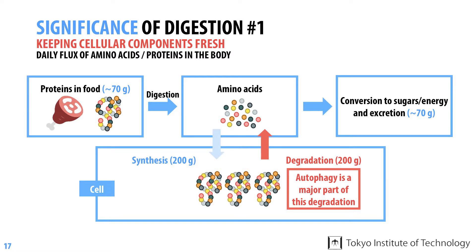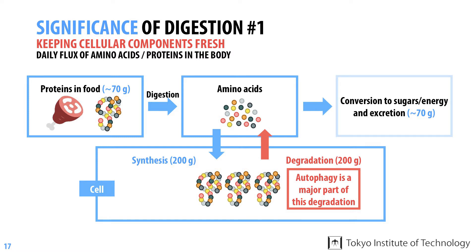About 200 grams of proteins are made every day from amino acids in our bodies. In addition, amino acids are also used for other purposes, such as the synthesis of non-protein molecules, and a subset of amino acids is excreted. This apparent shortfall in the flux of amino acids and proteins can be explained by protein degradation. In fact, about 200 grams of proteins in our bodies are degraded every day, and the resulting amino acids enter this flux. Autophagy is a major contributor to this degradation process.